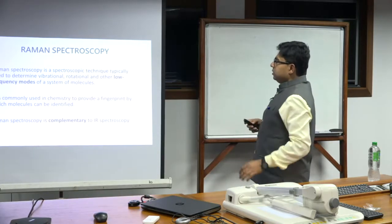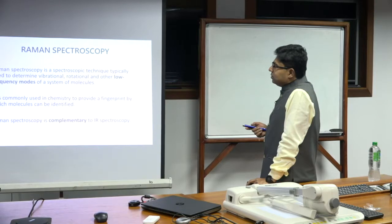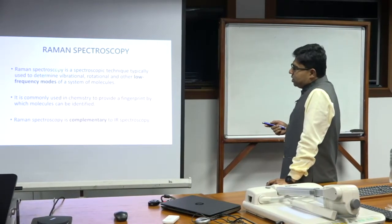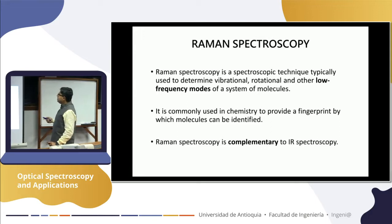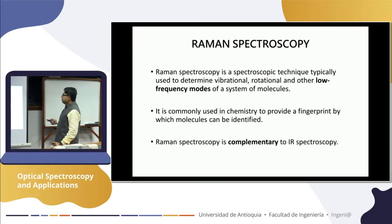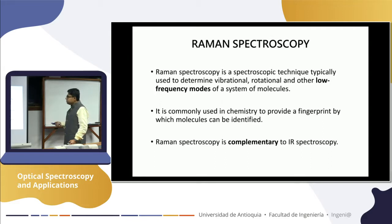Just to set the goal of what Raman spectroscopy is about. In UV-Vis spectroscopy we try to measure the electronic transitions of the material. But in Raman, like infrared spectroscopy, we will be looking for low energy modes — mostly vibrational and rotational modes. It's very commonly used in chemistry to provide a fingerprint of molecules. Almost each molecule has unique vibrational resonances that can be characterized using Raman spectroscopy.